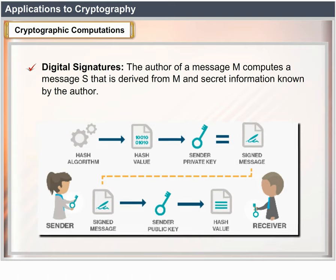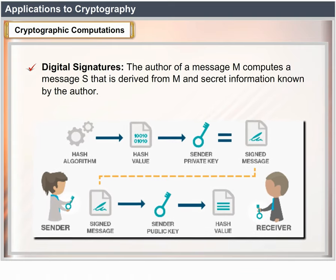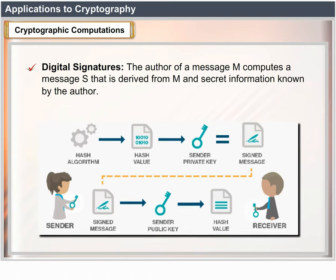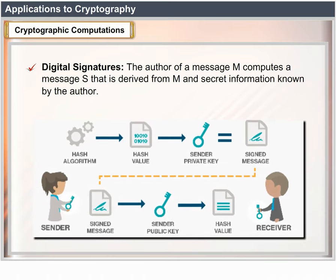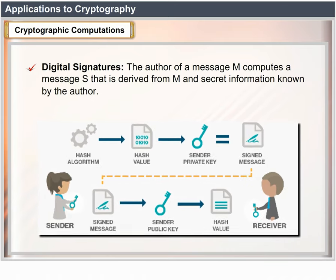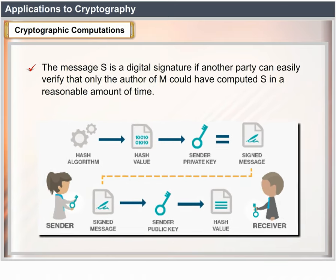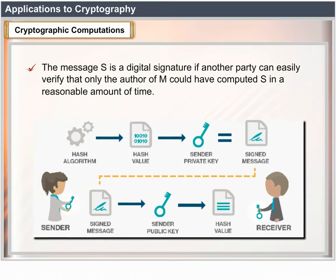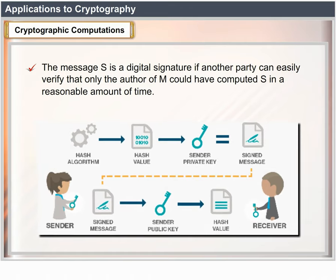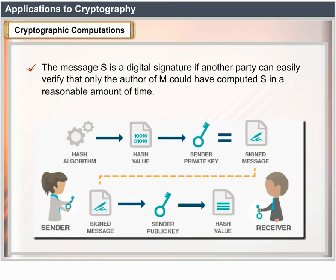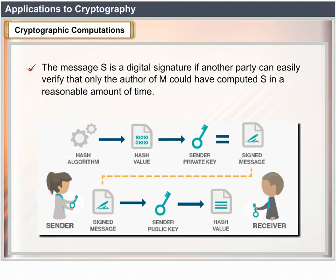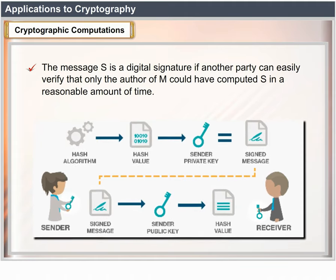An essential ingredient in encryption is that it should be computationally infeasible for an outsider to transform C back to M without knowing the secret information possessed by the receiver. Digital signatures: the author of a message M computes a message S that is derived from M and secret information known by the author. The message S is a digital signature if another party can easily verify that only the author of M would have computed S in a reasonable amount of time.